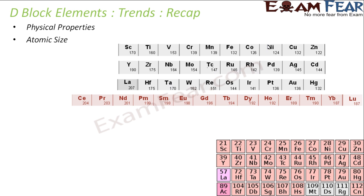Talking about the atomic size: the atomic size actually decreases as we go across the series. And if we go down the group, it increases. But due to lanthanide contraction, that trend is not followed from the second to third row. There is a decrease in atomic size as you increase the atomic number within the same series.